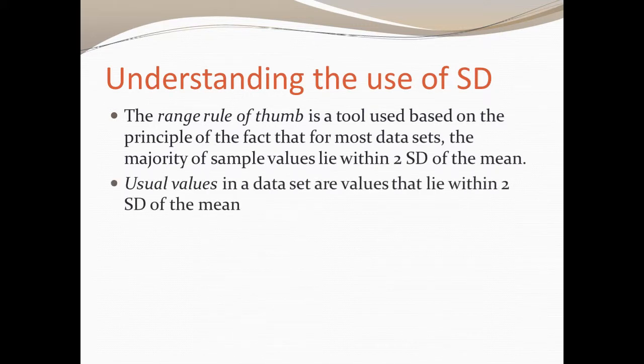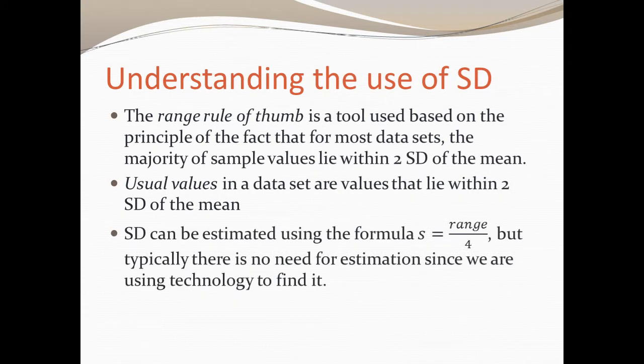Usual values in a data set are any values that lie within two standard deviations of the mean. Standard deviation can be estimated using the formula, range divided by 4. It's division by 4 because we're talking about two standard deviations above and two below. We also talk about most groups being divided into quartiles. But typically there's no need for this estimation since we're mostly using technology to find the standard deviation.